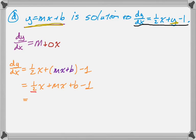And then kind of simplify this. And now if you look at this, we can factor it a little. So there's a one half in front of an x and there's an m in front of an x. So really the coefficient of x is one half plus m. And then plus b minus 1.